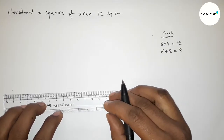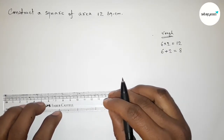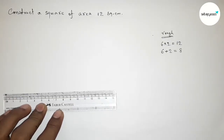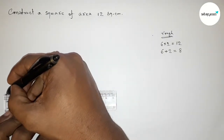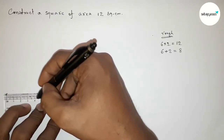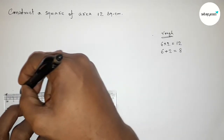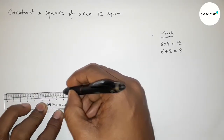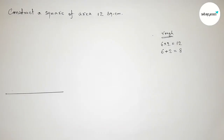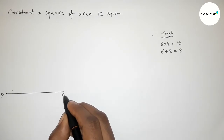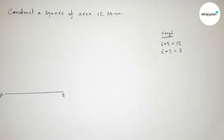I'm going to draw a line segment of length eight centimeters with the help of a scale. Starting from zero: one, two, three, four, five, six, seven, eight — so this is an eight centimeter line segment. Taking point P at the start and point Q at the end, so PQ equals eight centimeters.